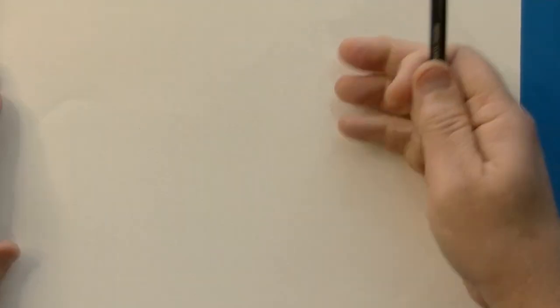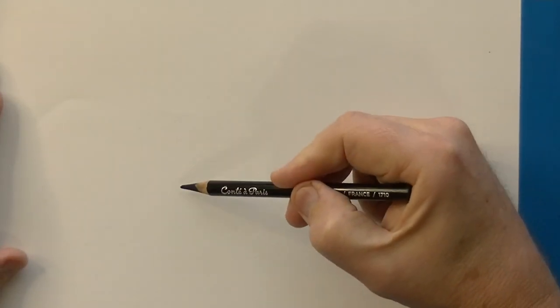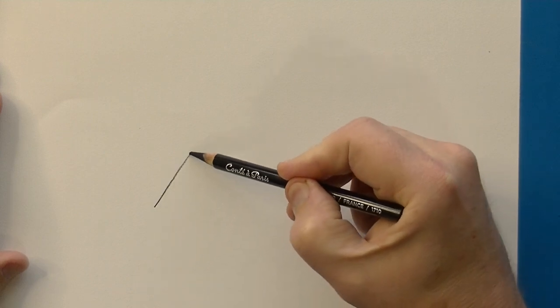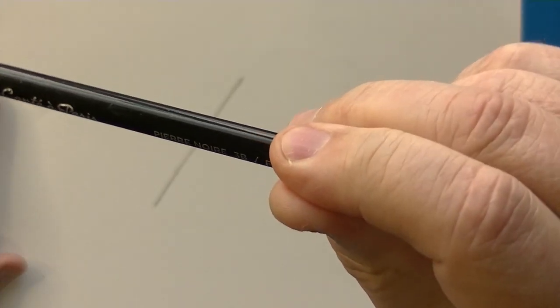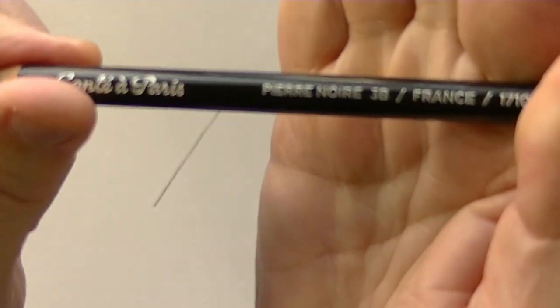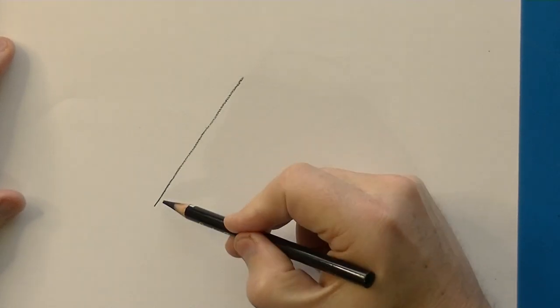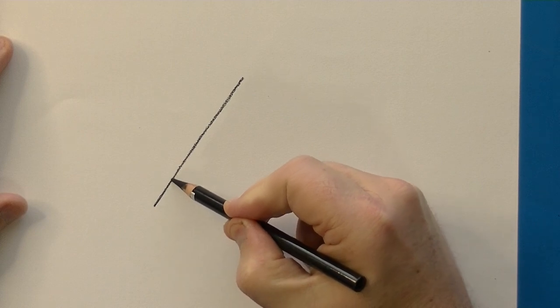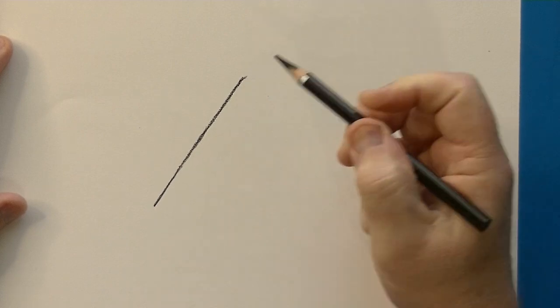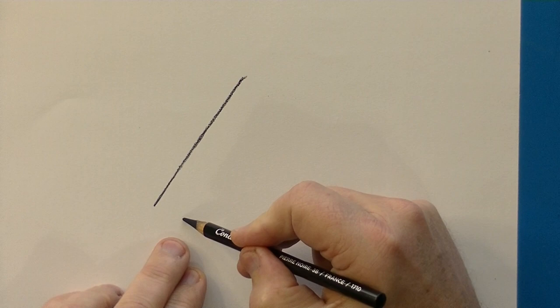Now, let me demonstrate how that might look on this sheet of paper here. I'm going to draw a couple of lines using a 3B charcoal pencil. So let's say I go ahead and I put in this crease here, but I'm going to make it a straight line.